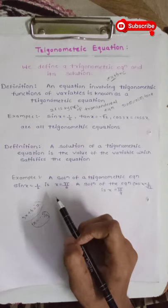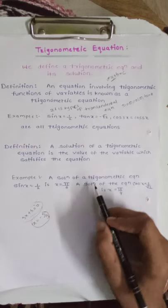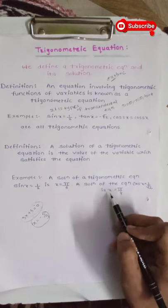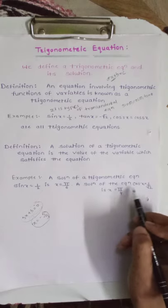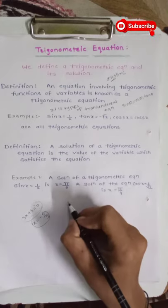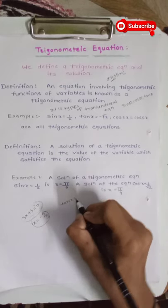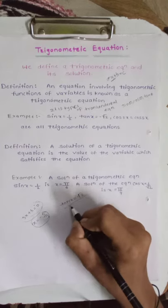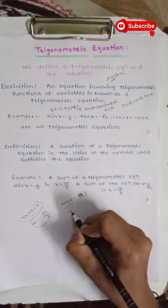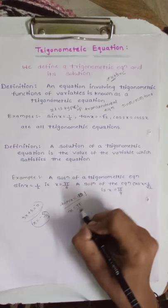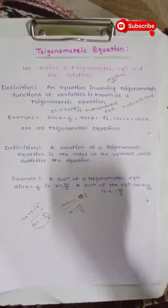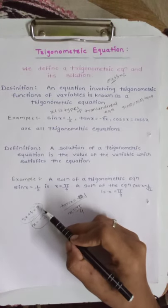We can see this from the trigonometric table and their angles. Another example: a solution of the equation cos x is equal to 1 by root 2 is x is equal to pi by 4. Putting this value of x into the equation gives 1 by root 2. Also, for tan x is equal to 1, the solution of this equation is x is equal to pi by 4.